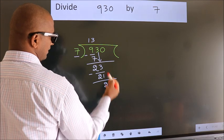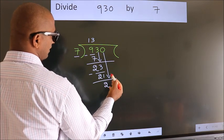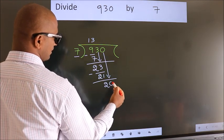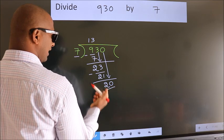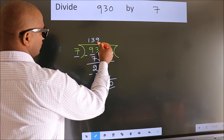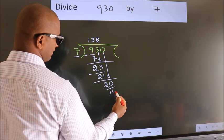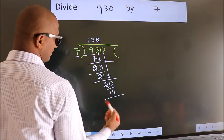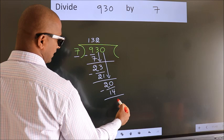After this, bring down the beside number. So 0 down, giving us 20. A number close to 20 in the 7 table is 7 twos, which is 14. Now we subtract. We get 6.